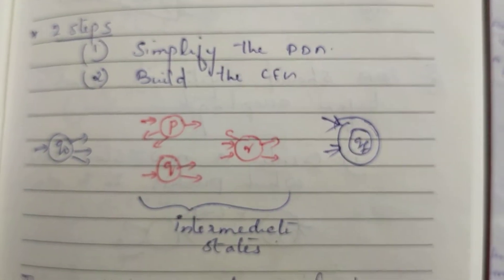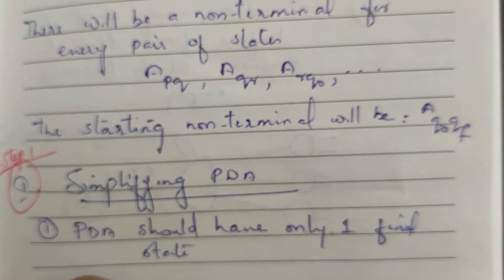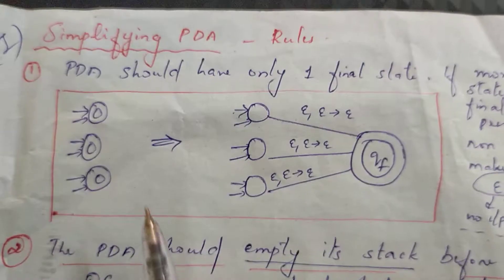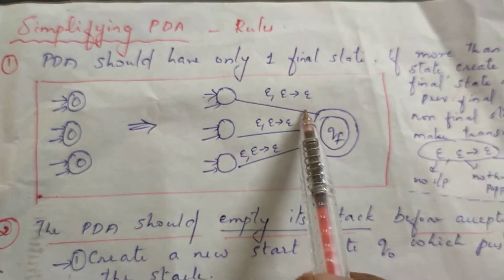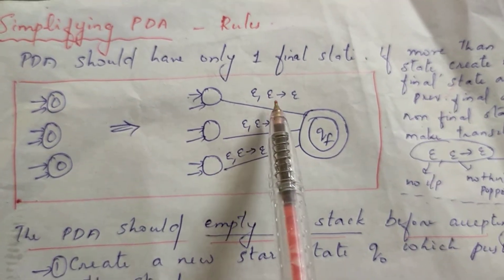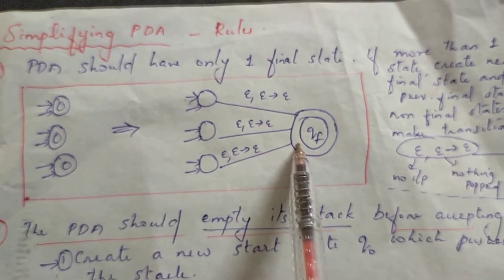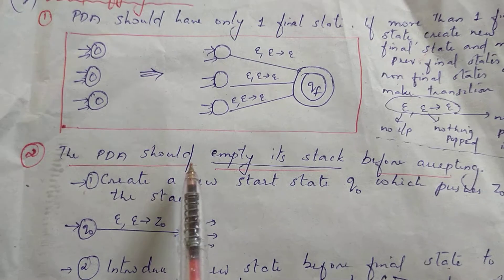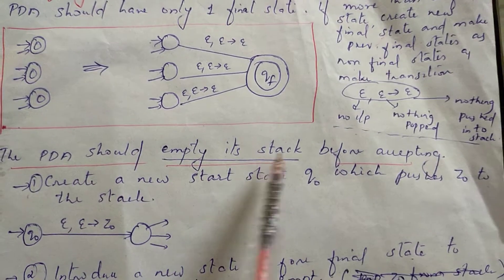We have to do 3 rules. We have to create a final state. Without any input symbol, we are popping nothing and we are pushing nothing. We have to create a final state. Then we have to do a second rule. We have to create a string for acceptance. We have to create a stack empty. The PDA should empty its stack before accepting.